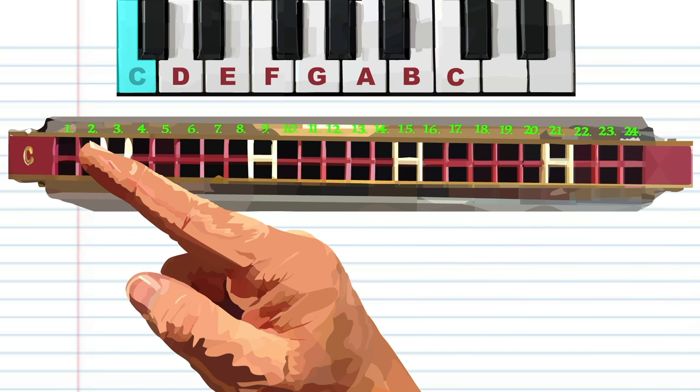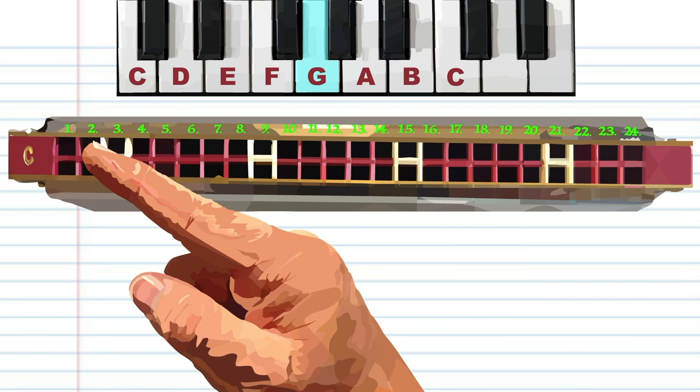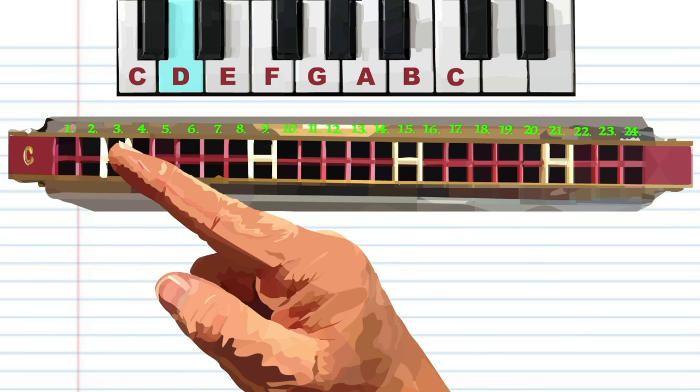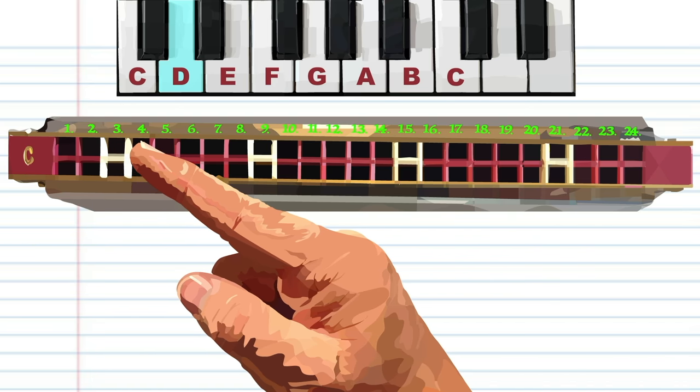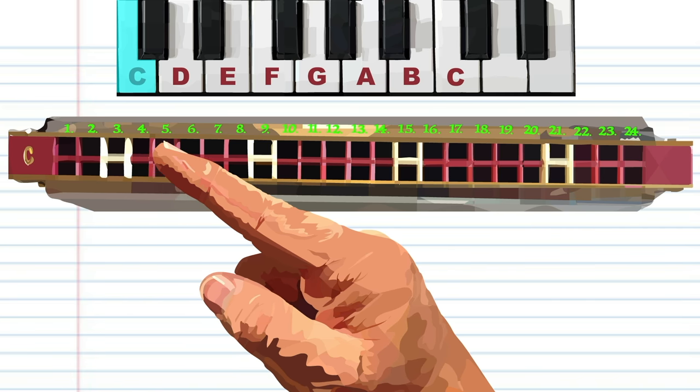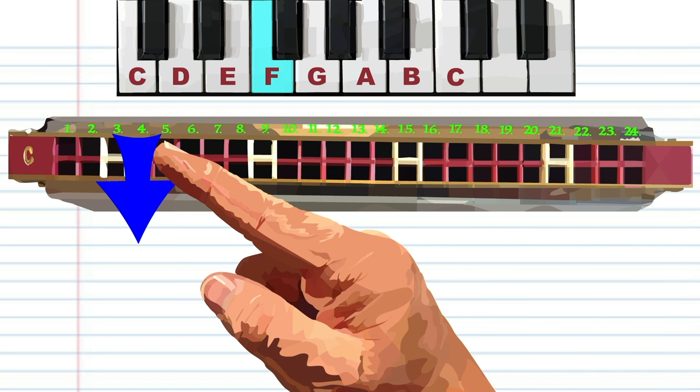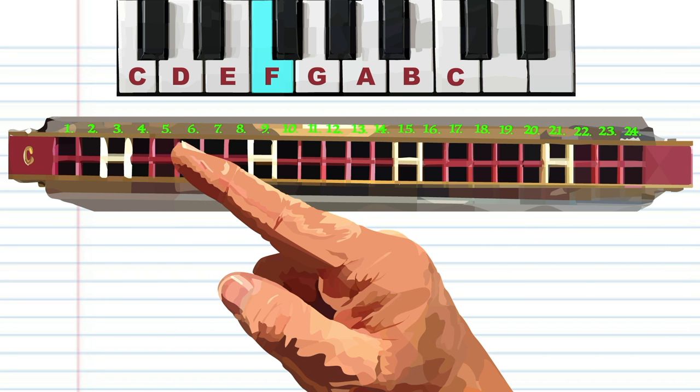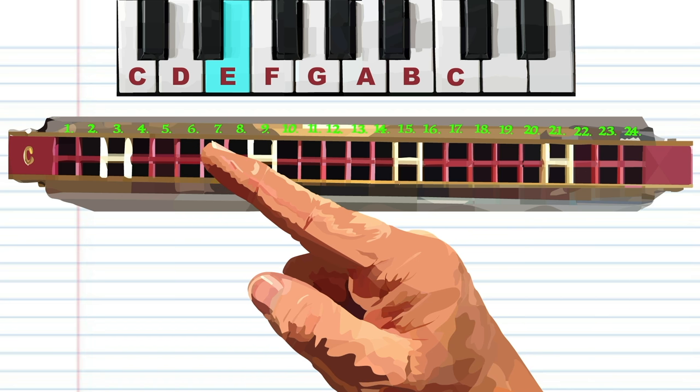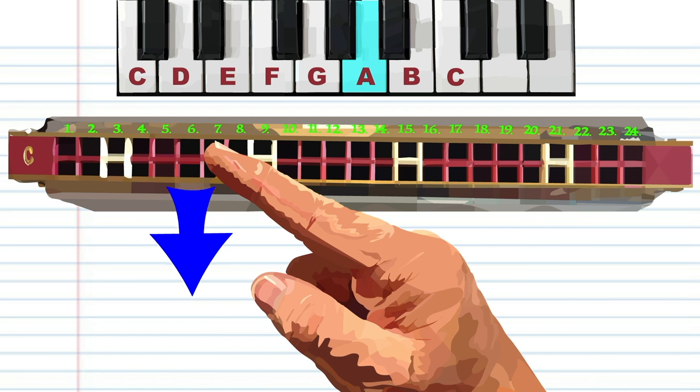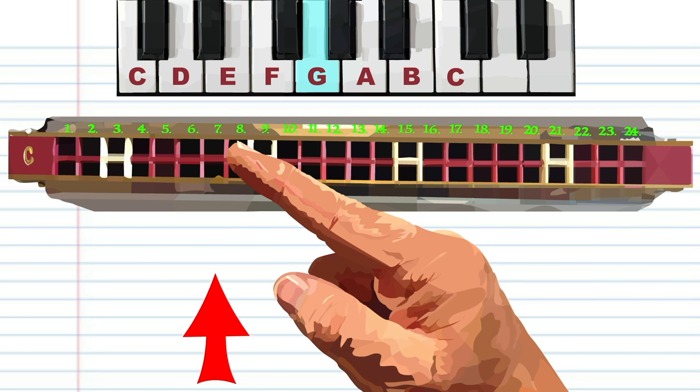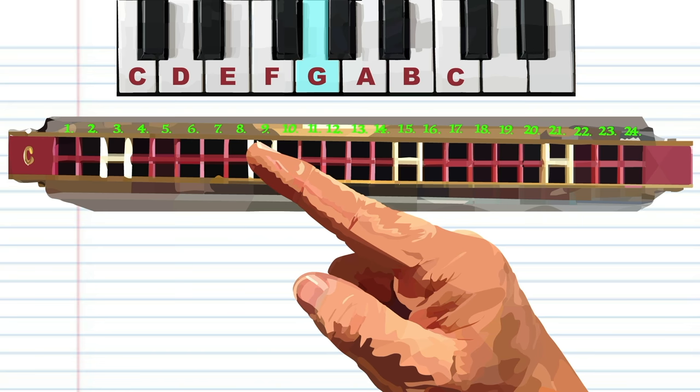So blowing into hole 1 produces G. Breathing in through 2 will produce D. Blowing into 3 produces C. Breathing into 4 produces F. Blowing into 5 produces E. Breathing in through 6 produces A. Blowing into 7 produces G. Breathing in through 8 produces B.